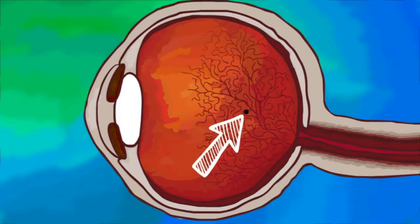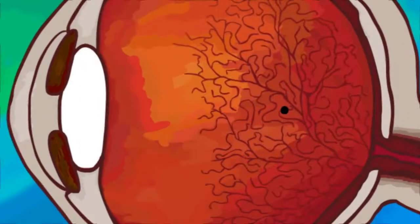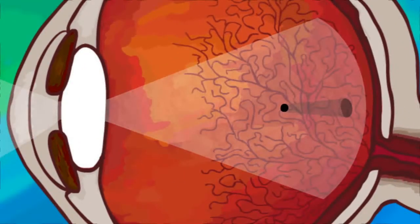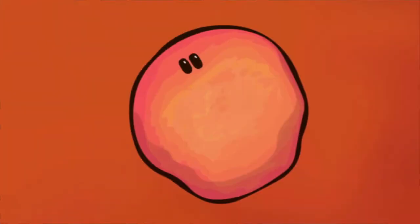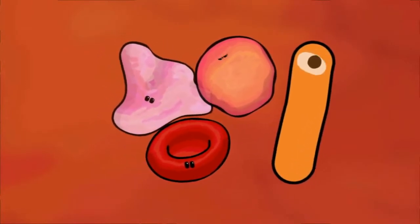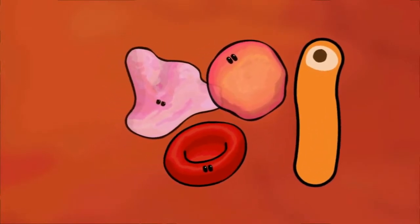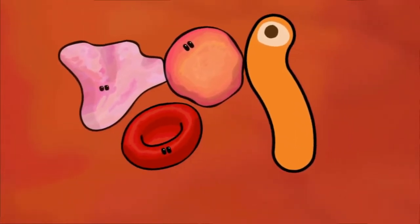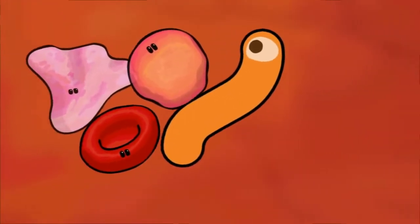Floaters may seem to be alive since they move and change shape, but they're not alive. Floaters are tiny objects that cast shadows on the retina, the light-sensitive tissue at the back of your eye. They might be bits of tissue, red blood cells, or clumps of protein. Because they're suspended within the vitreous humor, the gel-like liquid that fills the inside of your eye, floaters drift along with your eye movements and seem to bounce a little when your eye stops.